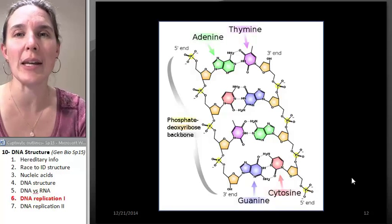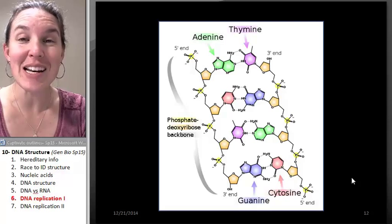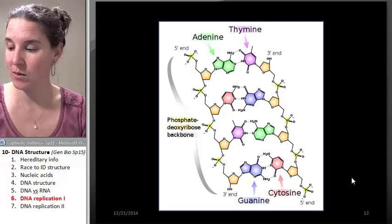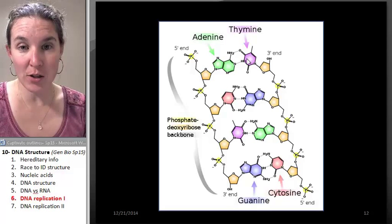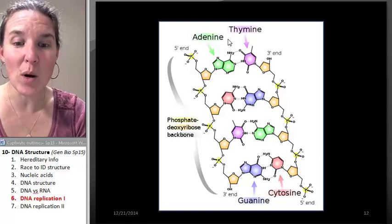Think about this. In a human, are you ready? There are three to six billion base pairs. What was my base pair? Here's a base pair. Three to six billion in one cell.